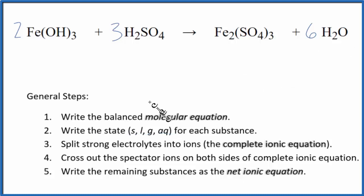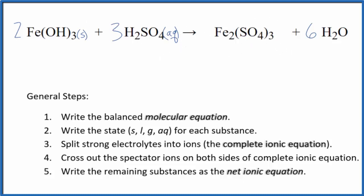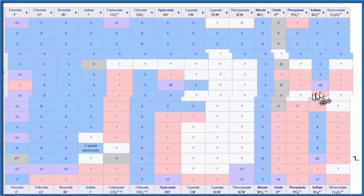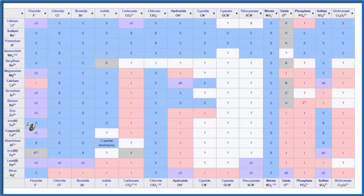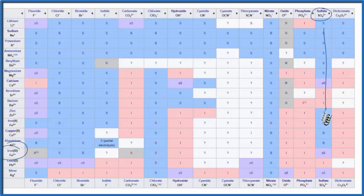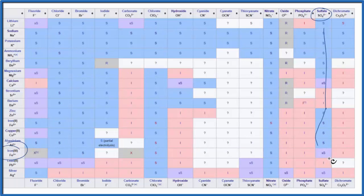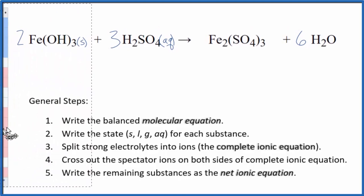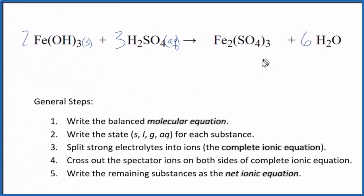We need to write the state for each substance. In general, hydroxides with these transition metals are not soluble — they're insoluble. Put a little S — this is going to be a solid. Sulfuric acid is a strong acid, so it's going to be a strong electrolyte; it'll dissociate into its ions. Sulfates in general are soluble, but there are some exceptions, so I want to check this on a solubility chart. We can find iron three right here and then the sulfate over here. I see SS — that means it's going to be slightly soluble. Only a very small amount will dissolve in water. With ionic equations, we consider slightly soluble to be insoluble, so let's put a little S for solid, and then an L for liquid.